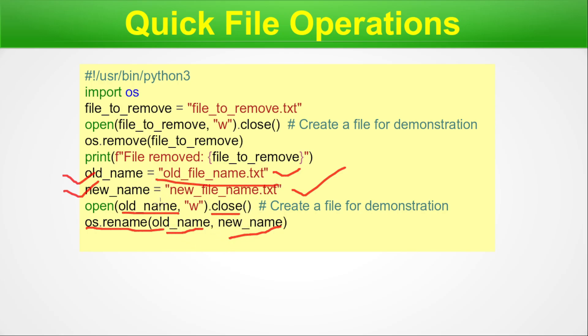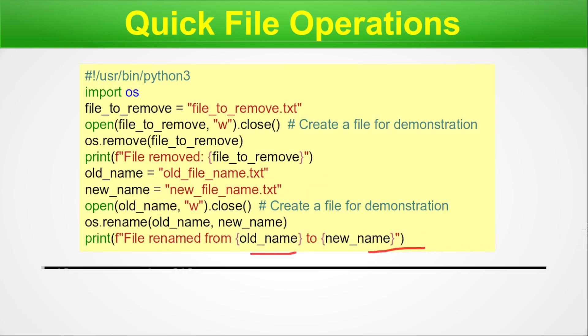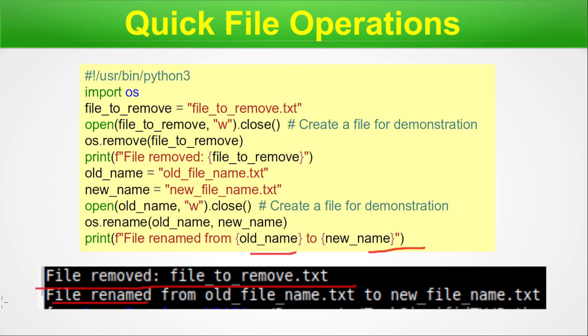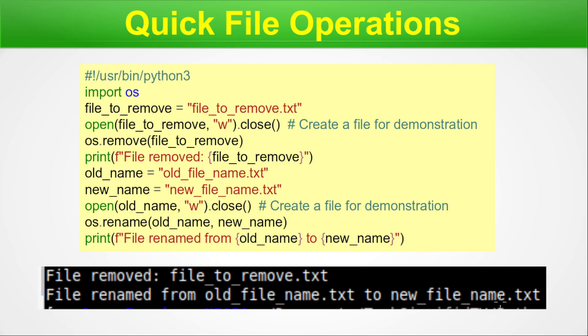Once we execute this code, the output shows 'file removed: files_remove.txt' and 'file renamed from old_file_name.txt to new_file_name.txt'. These are simple file operations using the OS module — removing or renaming. Download this code from the GitHub link, do some changes, play with it, and run the code. Unless you are playing with the code, you will not be able to learn the coding style.